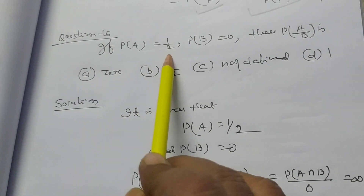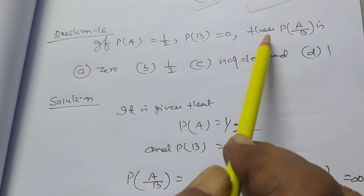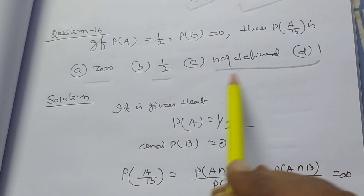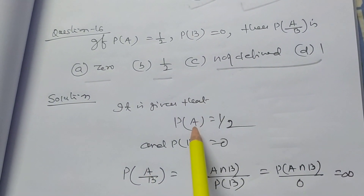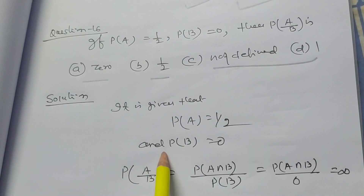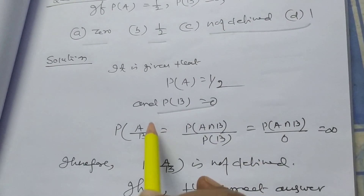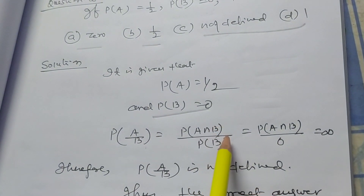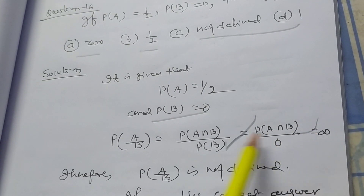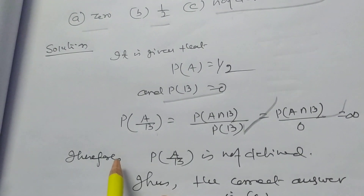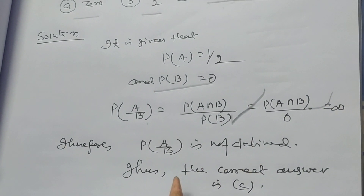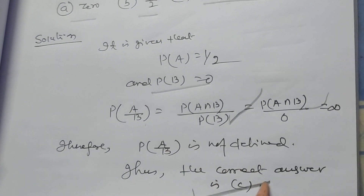If P(A) = 1/2 and P(B) = 0, then P(A|B) = P(A∩B)/P(B) = P(A∩B)/0, which is not defined. Therefore P(A|B) is not defined, and the correct answer is C.